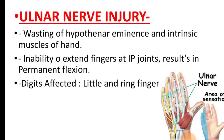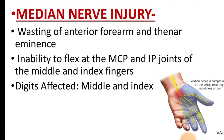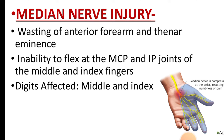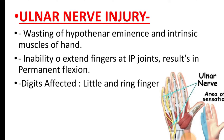Moving towards ulnar nerve injury: wasting of the hypothenar eminence and intrinsic muscles of the hand, and inability to extend the fingers at the interphalangeal joints, resulting in permanent flexion. Compare this to median nerve injury, which causes inability to flex at the metacarpophalangeal and interphalangeal joints. In ulnar nerve injury, the little and ring fingers are affected, while in median nerve injury the middle and index fingers are affected.